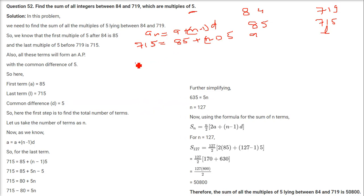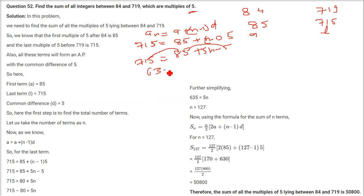So 715 = 85 + 5N − 5. That gives 85 − 5 = 80, and 715 − 80 = 635, so 5N = 635, meaning N = 635 ÷ 5 = 127. There are 127 numbers divisible by 5 between 84 and 719.